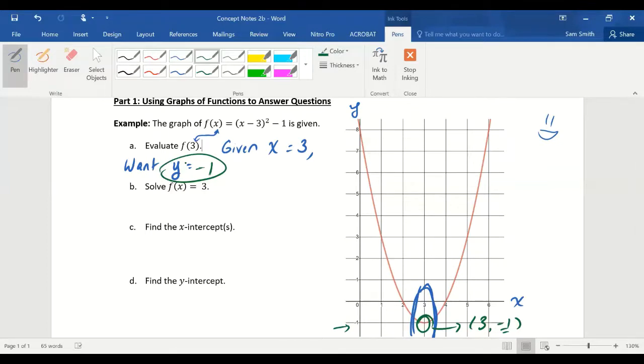Let's try and solve part b in a similar way. Solve f(x) = 3. Now what do you think this time? f(x) = 3, 3 on the far side of the equation. Who is being given to me now? x or y?